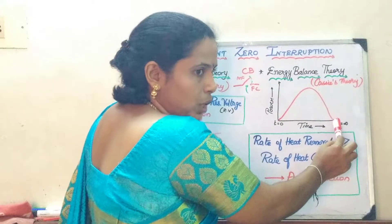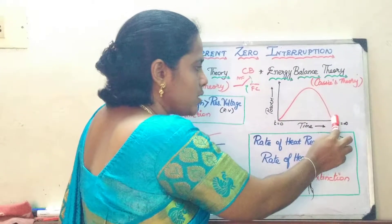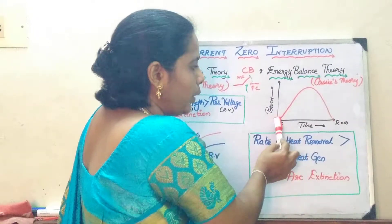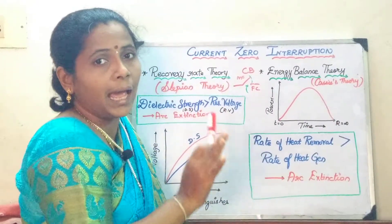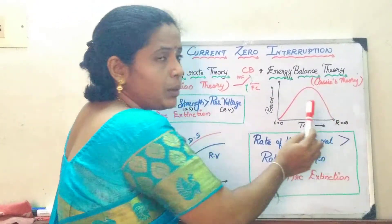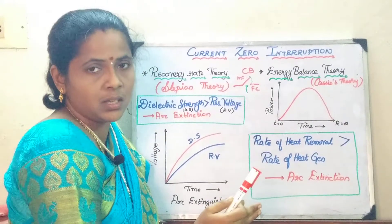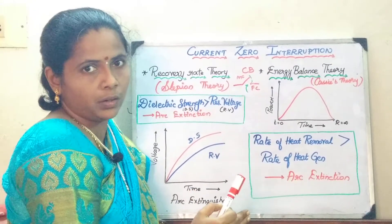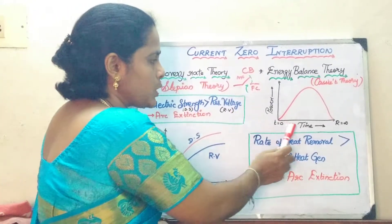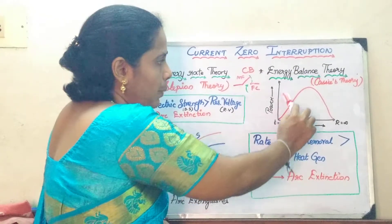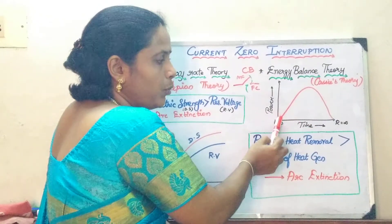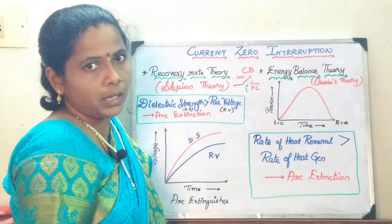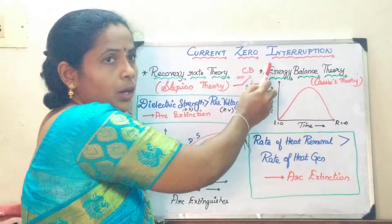This point shows the arc extinguishing process — the opening of the circuit breaker is the arc extinguishing process. Ideally, the resistance will be infinity or a high resistance, and in that case we are able to extinguish the arc in the circuit breaker. As the current and voltage increase, the power also increases. This is the starting time of opening the breaker, and this is the time at which you are going to extinguish the arc. Power multiplied by time constitutes energy.